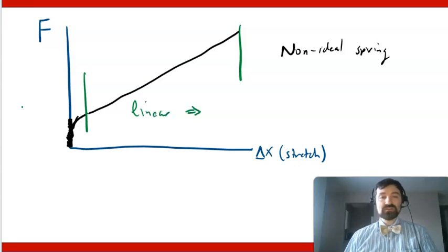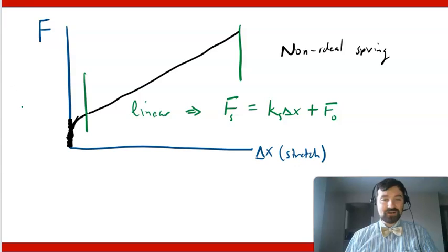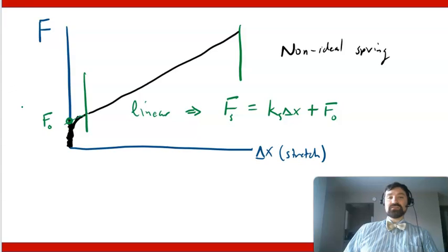And so we can still write basically Hooke's law, F equals k delta x. It's just that now we have an additional parameter, which I'm going to call F naught. F naught is essentially where this line intersects with the force axis, the y axis.